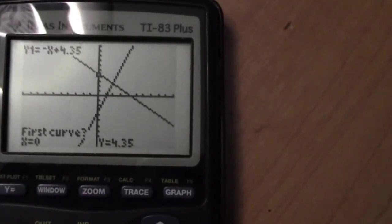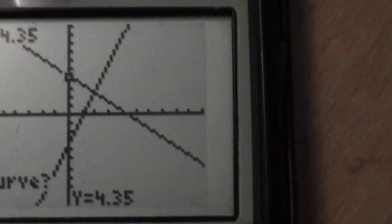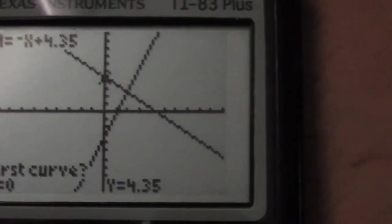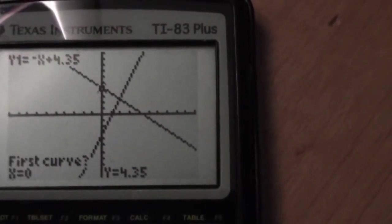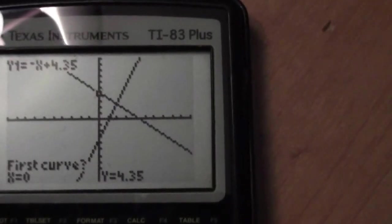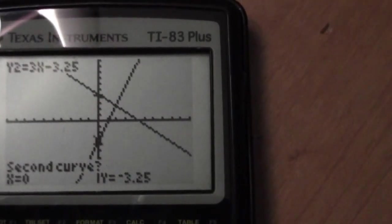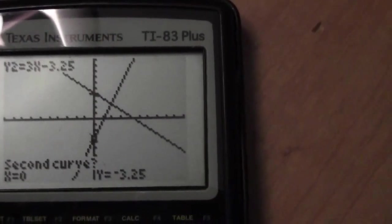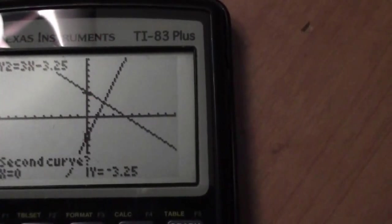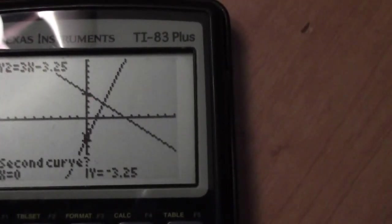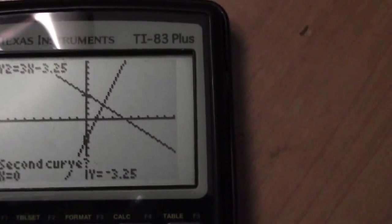At this point, you'll have a flashing cursor on one of your lines. And on the calculator screen, it will say first curve. You need to hit enter at this point. Notice that the flashing cursor has moved to the second line, and it says second curve. So you hit enter once again.